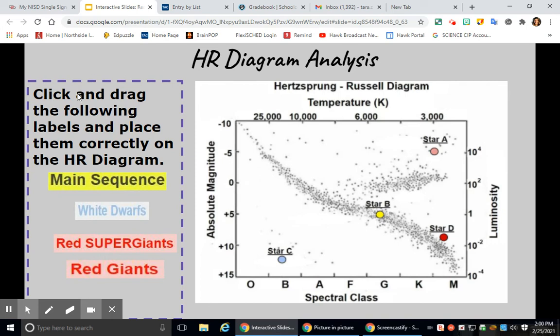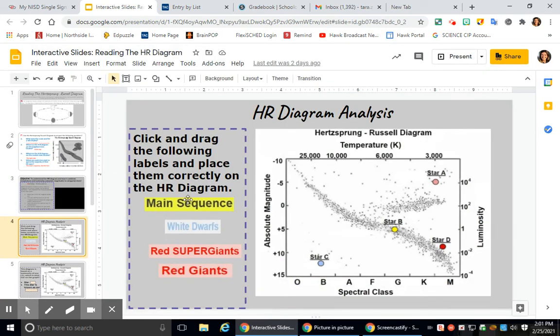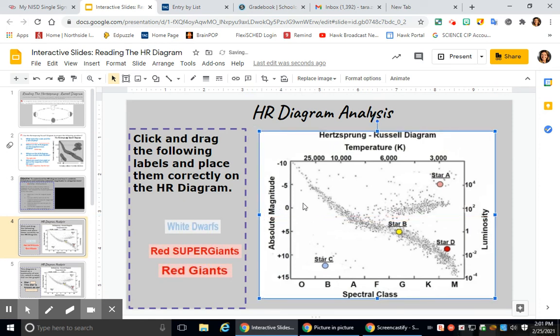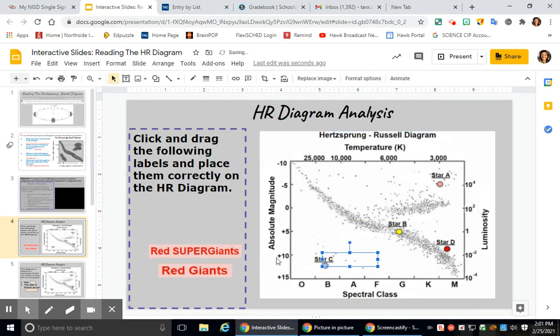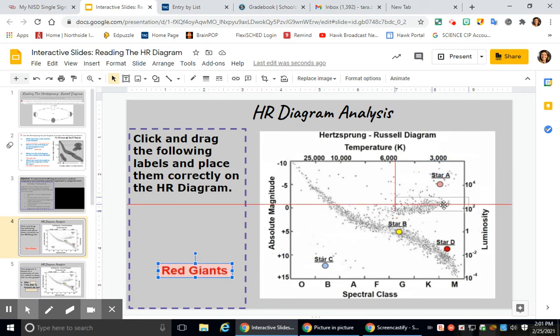HR diagram analysis. Click and drag the following labels and place them correctly on the HR diagram. So main sequence. Remember main sequence stars run from top all the way to bottom. This diagonal band are going to be your main sequence stars. Okay, and that is not labeling correctly there. White dwarfs. White dwarfs would be down here at the bottom. White dwarfs are dim stars, but they're hot. Super red giants are going to be located up here, kind of close to star A. Now these stars are very bright because their absolute magnitude and luminosity is up at the top, but they are also cool stars because of their temperature. And red giants are found in this cluster just below the super red giants. They also have a cooler temperature, but they're pretty bright. They're brighter than our sun on the luminosity scale.